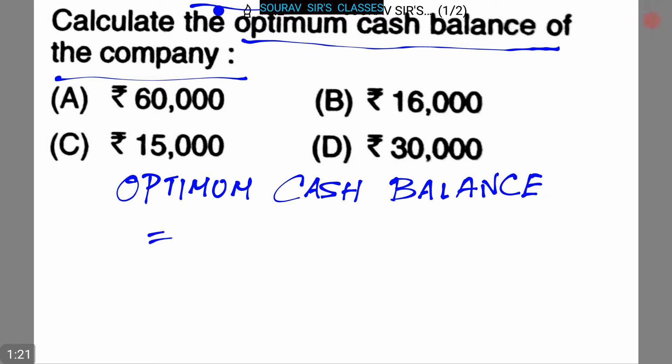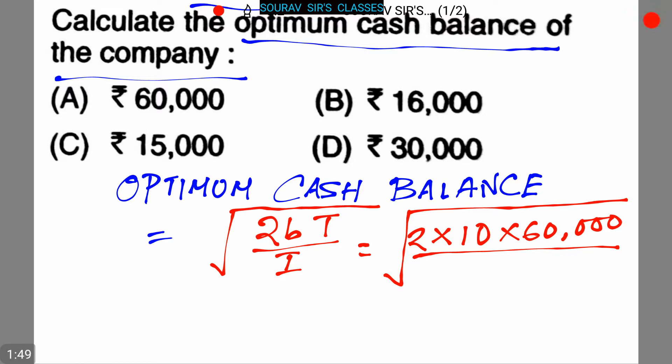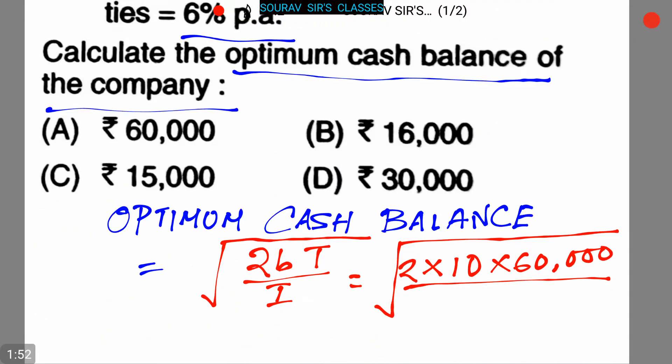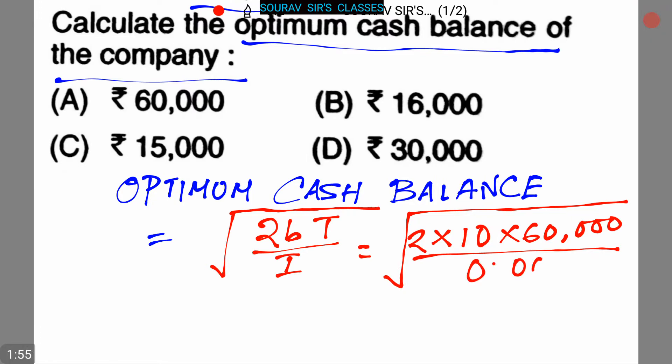Optimum cash balance equals square root of 2BT divided by I. Putting the values, we can rewrite it as: equals square root of 2 times B is 10, that is given in the question, and T is 60,000, that is also given in the question, and the rate of interest is 0.005.